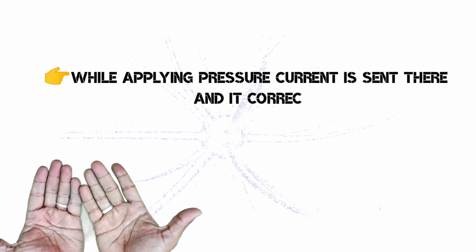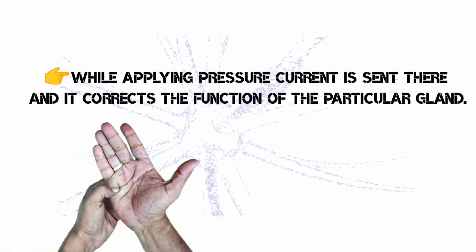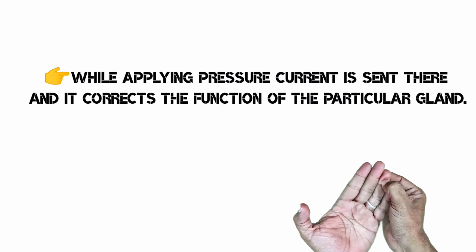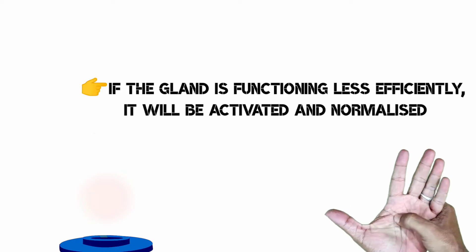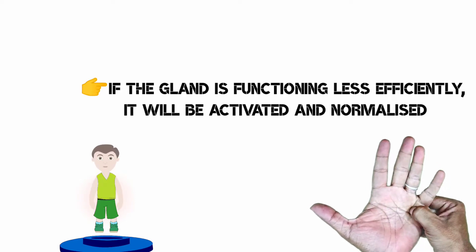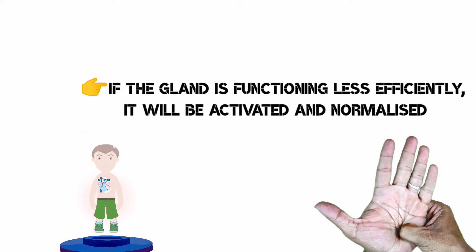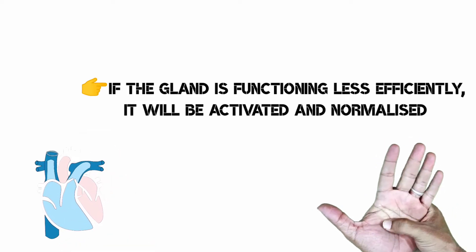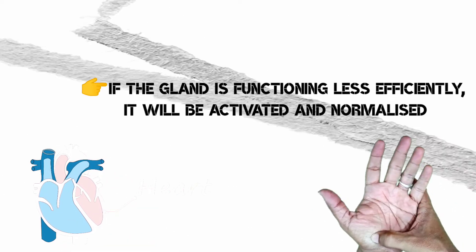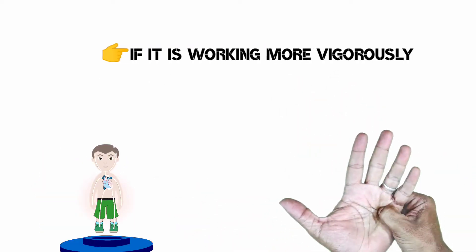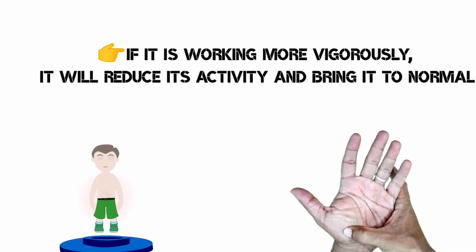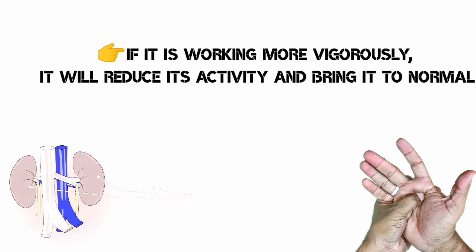When applying pressure, current is sent and it corrects the function of the particular gland. If the gland is functioning less efficiently, it will be activated and normalized. If it's working more vigorously, it will reduce its activity and bring it to normal.